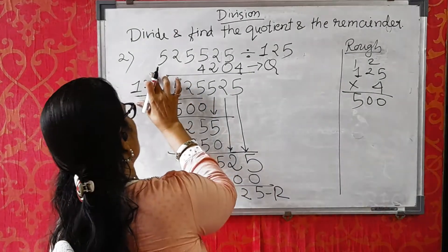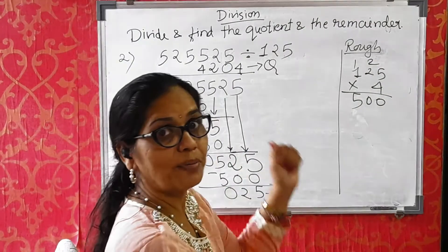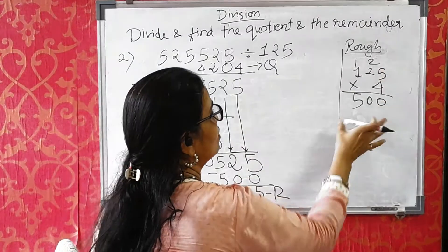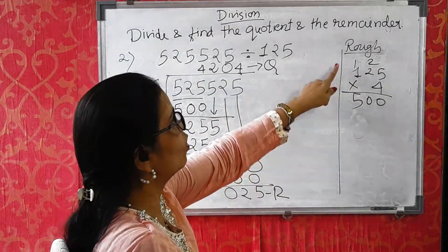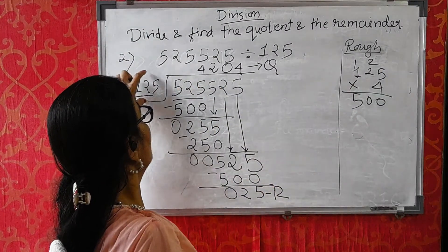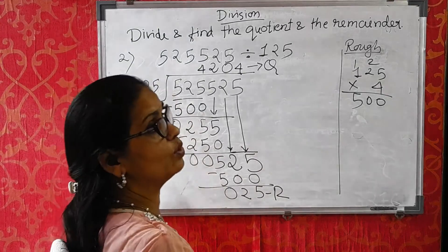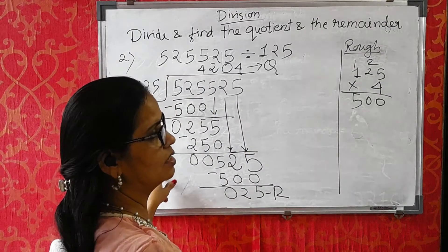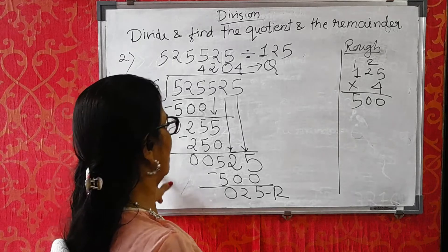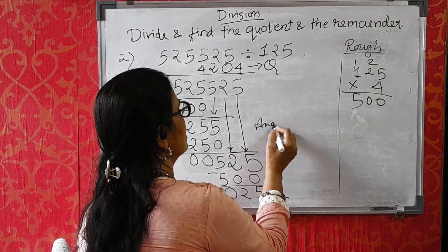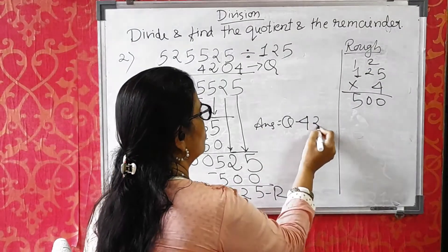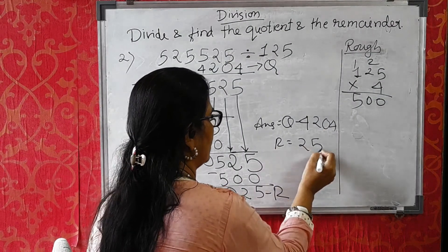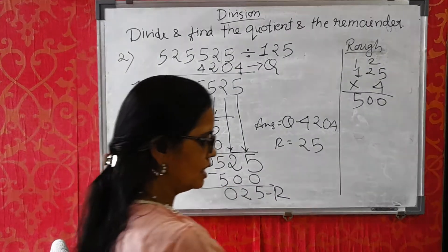This is the way you do division for a bigger divisor. Here I have done only one multiplication — I did not write out the 125 table from 1 to 10, which would consume your time. Final answer: quotient is 4204 and remainder is 25.